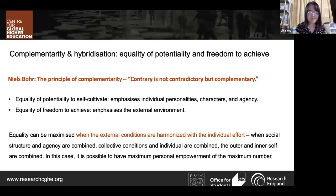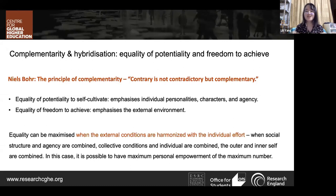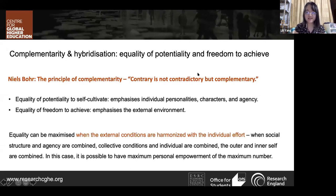This new term assumes that every individual is equally educable, the environment needs to provide necessary conditions for their development, and individuals also need their own commitment to self-formation. The key message is that equality can be maximized when external conditions are harmonized with individual effort — when social structure and agency are combined, collective conditions and individual effort combined, and the outer and inner self combined. This points toward a way for higher education to be organized to promote social equity more effectively.